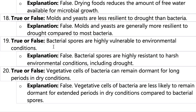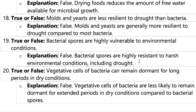Number nineteen: bacteria spores are highly vulnerable to environmental conditions. This is false — bacteria spores are really strong and not vulnerable; they can still survive harsh conditions.